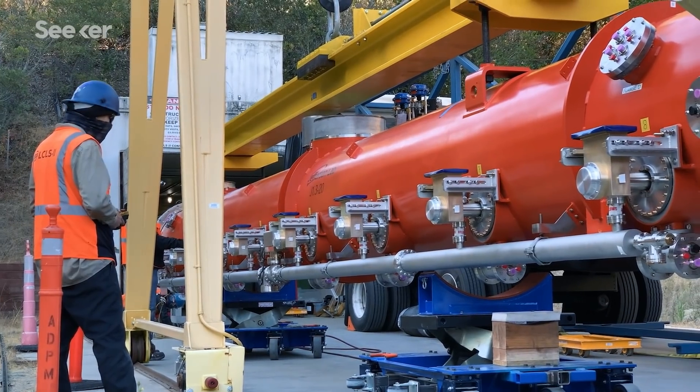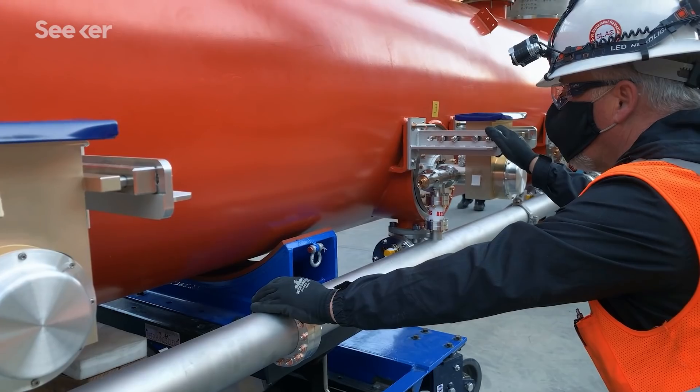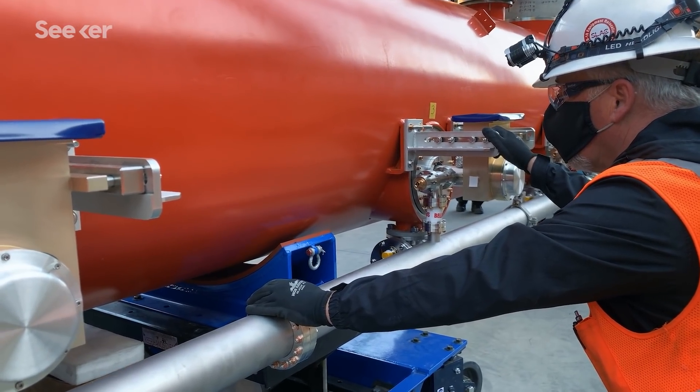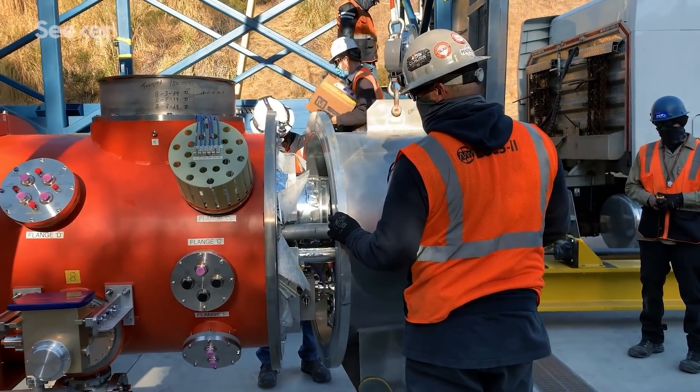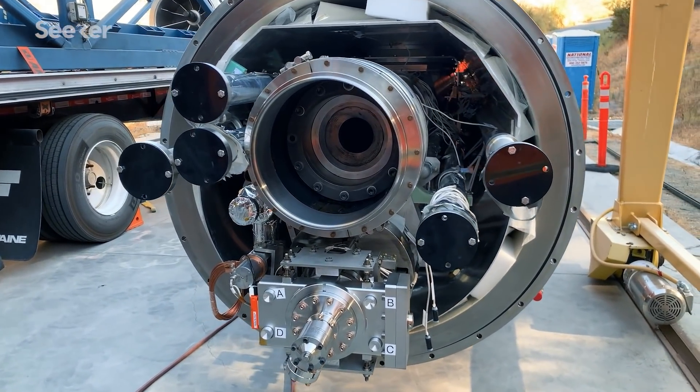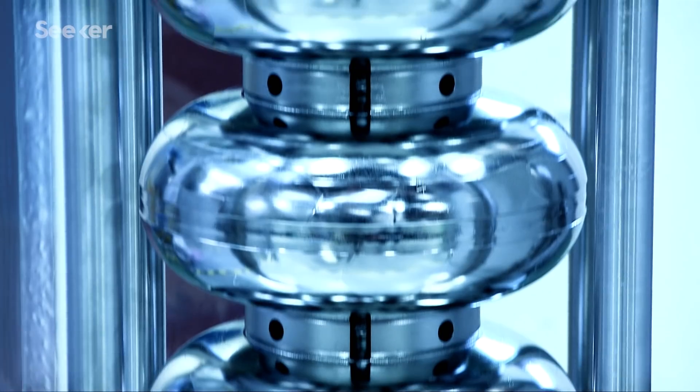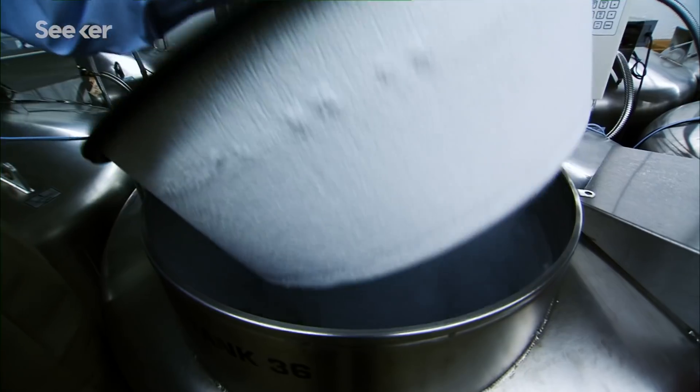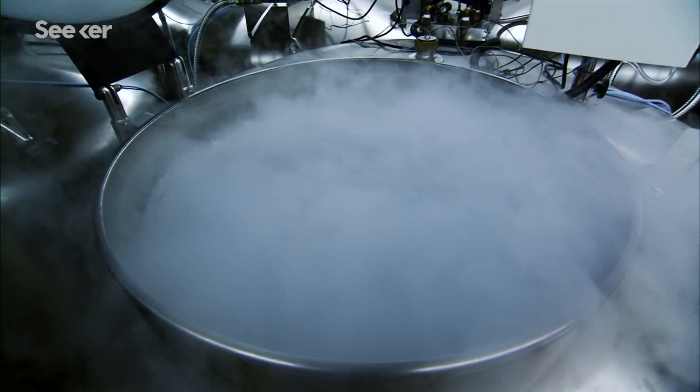So for LCLS 2, we will be installing 37 cryomodules. Each of our cryomodules in the tunnel is roughly 12 meters long, and each has eight accelerating cavities inside of it. We're using these new niobium cavities. They're superconducting, and the way we get them superconducting is we bathe them in liquid helium. So it's two degrees above absolute zero, where, in principle, all motion stops.